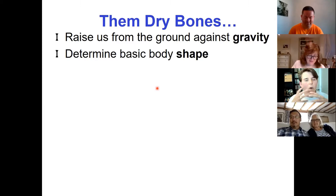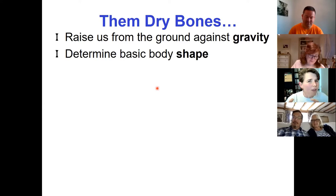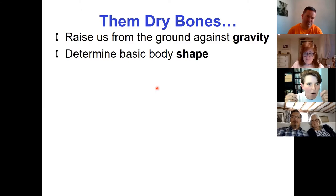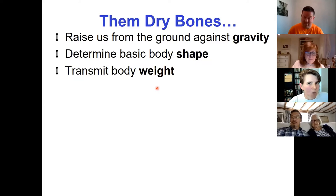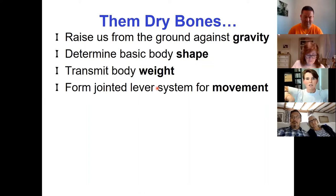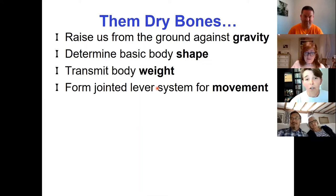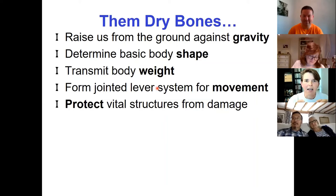It also determines our basic body shape — your face is the way it is because of the bone structure underneath. You may have seen CSI where they find a skull and can recreate the entire face based solely on it. Your bones determine how big you are and that a human looks like a human and not a dog. It also transmits your body weight, and it forms lever systems so we can move our arms and legs — back in evolution, to run away from predators.